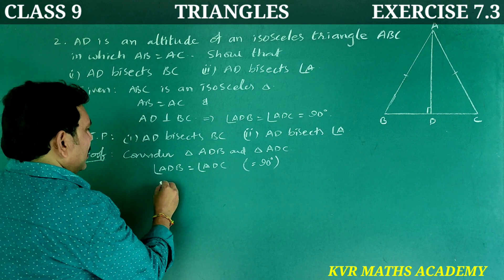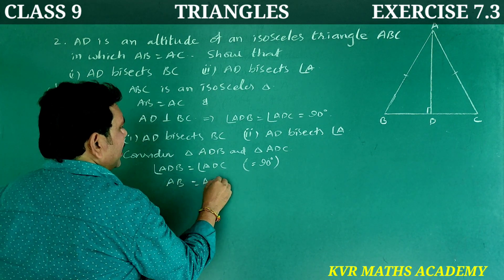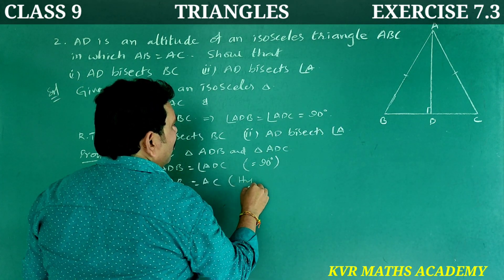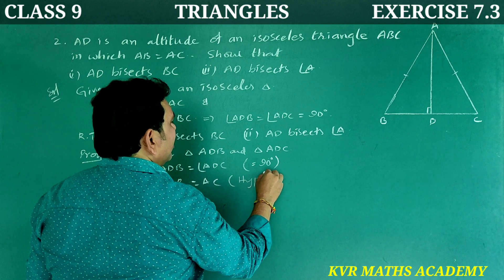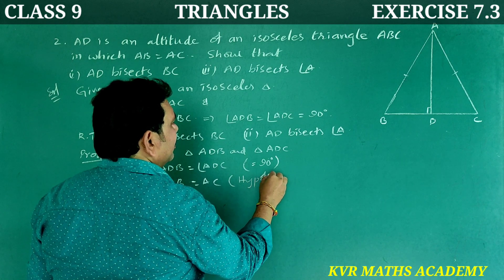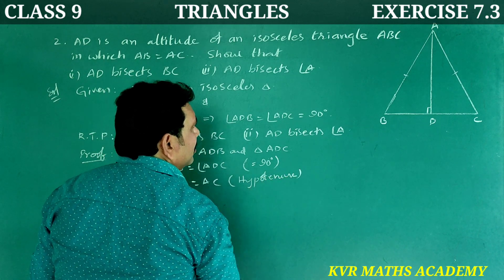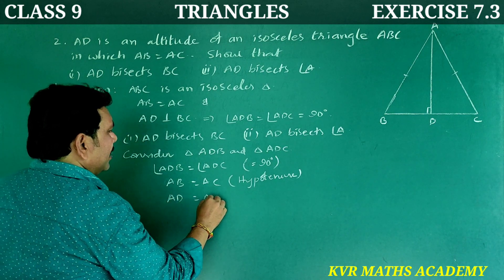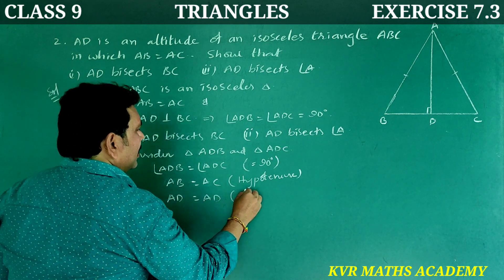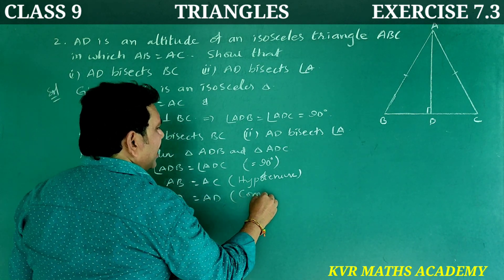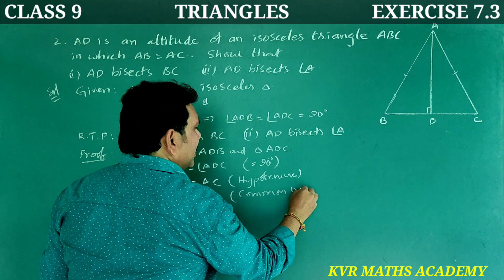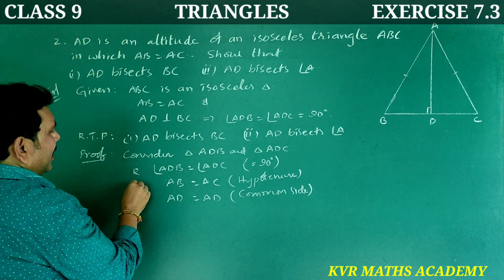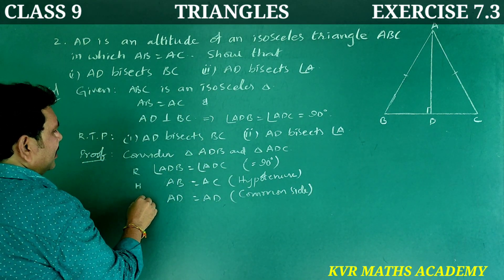Next, AB is equal to AC — this is the hypotenuse in both triangles. Next, AD is equal to AD — it is a common side. So we have right angle, hypotenuse, and side.